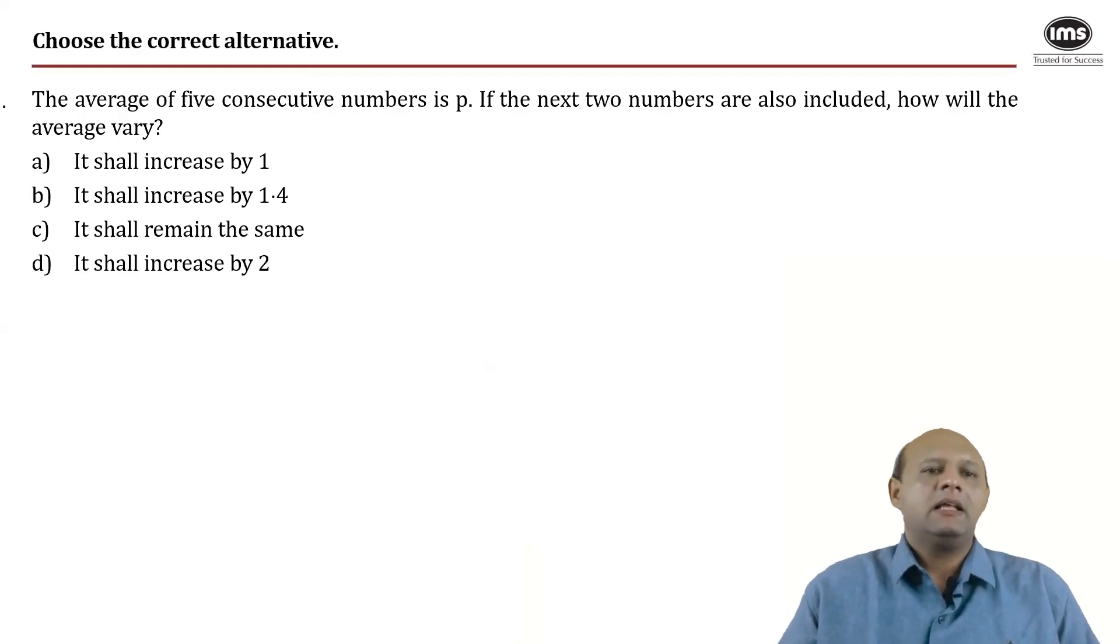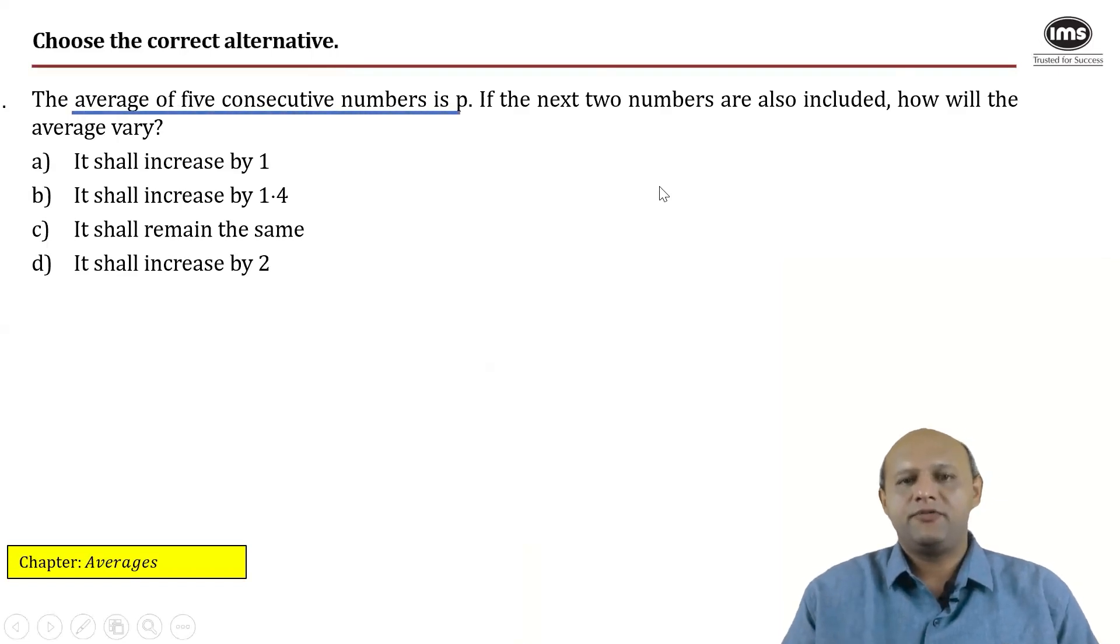It says the average of five consecutive numbers is p. Clearly the concept that has been tested is that of averages. The average of five consecutive numbers is p.